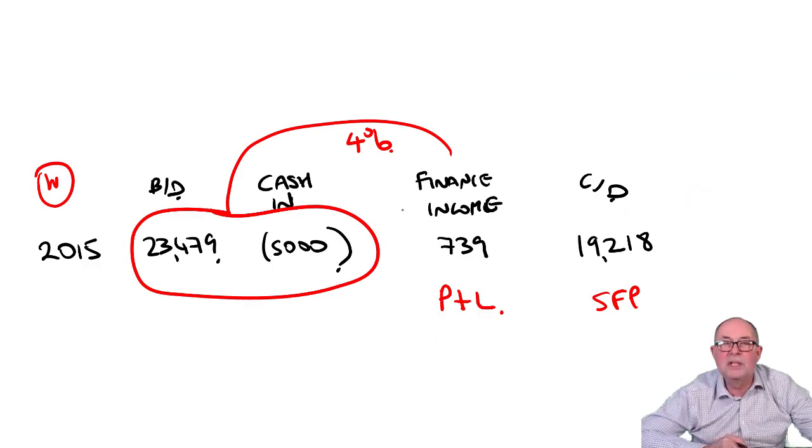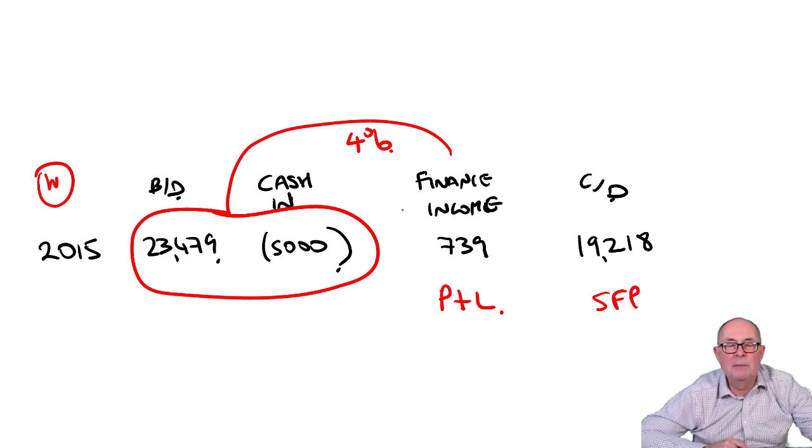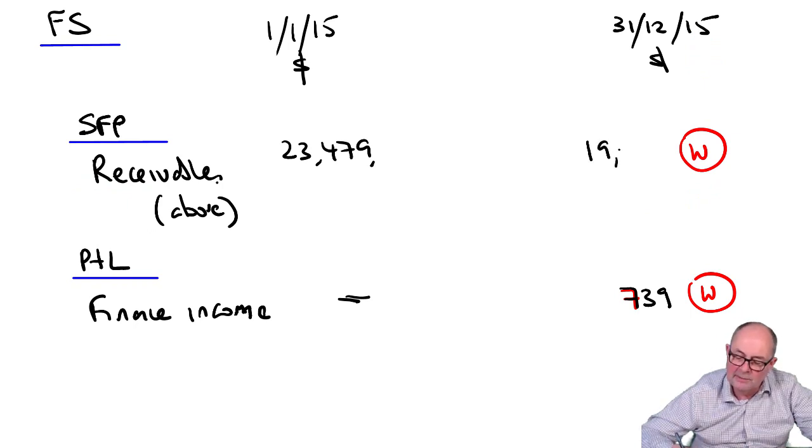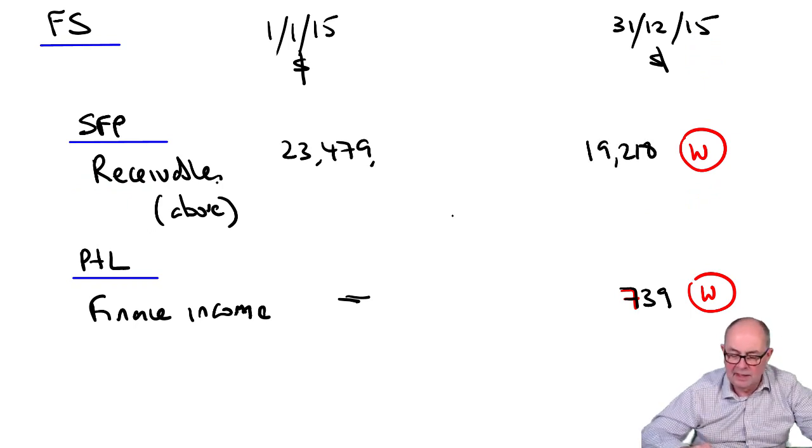Don't forget, you can pause these recordings if you need to make notes. 739 in the profit and loss, 19,218 in the SoFP.